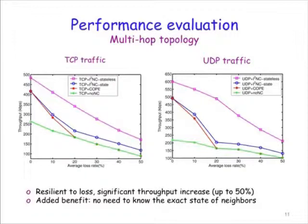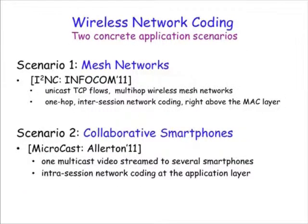Here I'm showing the results of one example scenario, the multicop topology from slide 5. We compared different schemes as loss rate increases. As expected, the throughput of all schemes decreases for higher loss rates. However, the proposed schemes — in particular the stateless scheme shown in magenta — perform significantly better. It can achieve up to 50% higher throughput even in the presence of high loss rates, while operating with much less information from the neighbors. The performance benefit is consistent for both TCP and UDP traffic.